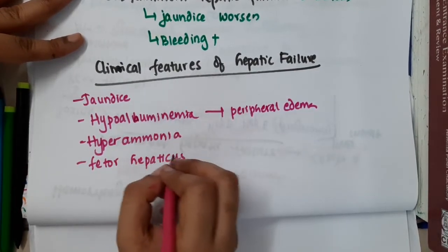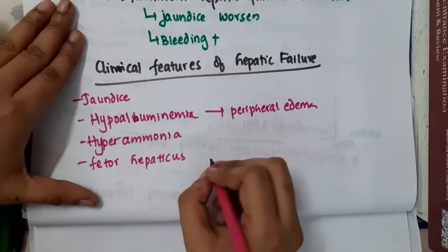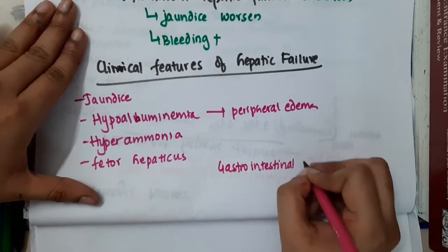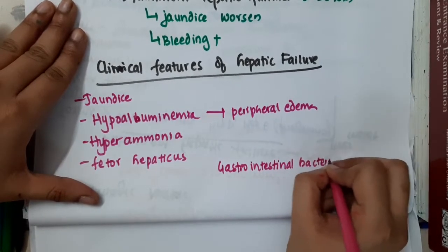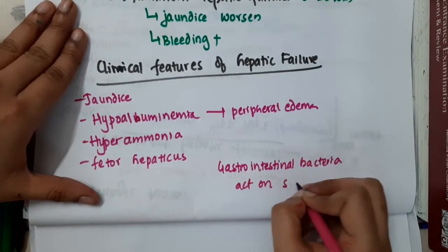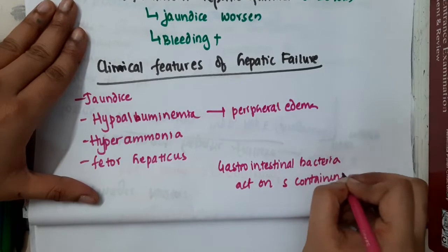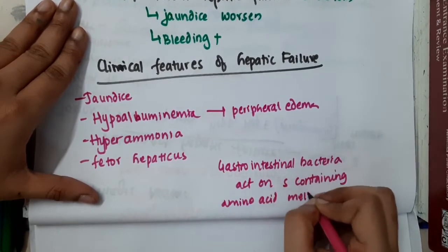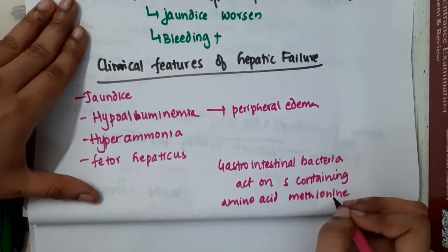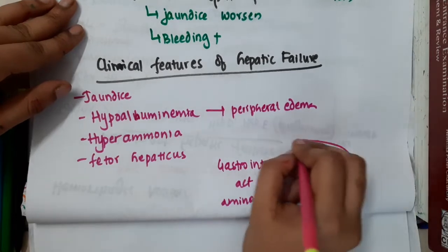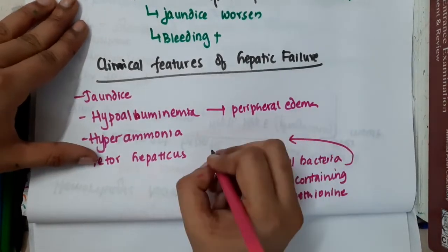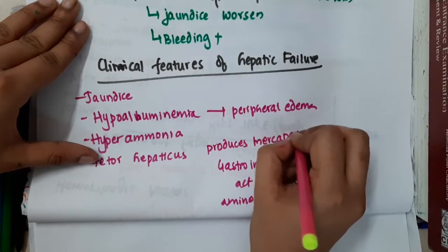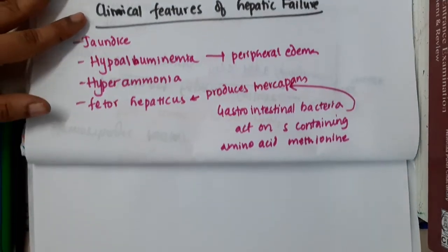Now why fetal hepaticus? Because the gastrointestinal bacteria which are present in the intestine will act on the sulfur-containing amino acid methionine. Once it acts on sulfur-containing amino acid methionine, it produces mercaptans, and these mercaptans are responsible for fetal hepaticus or bad odor.